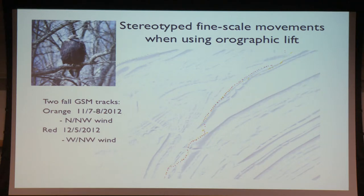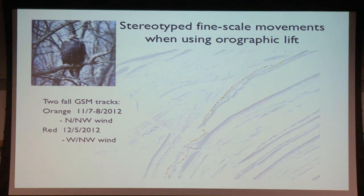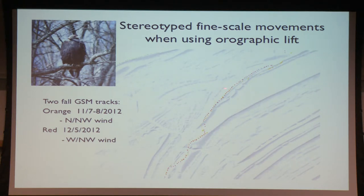One of the neat things about birds using orographic lift is that their movements are fairly stereotyped. These are two GSM tracks from Mike and Trish Miller, Todd Katzner, and others — two birds separated by almost a month in time but moving under very similar wind conditions. Their tracks are almost on top of each other, particularly where a bird leaves one ridge, crosses to another and continues. To me that's uncanny. It suggests that if we have a good enough mechanistic model, we can simulate these movements.